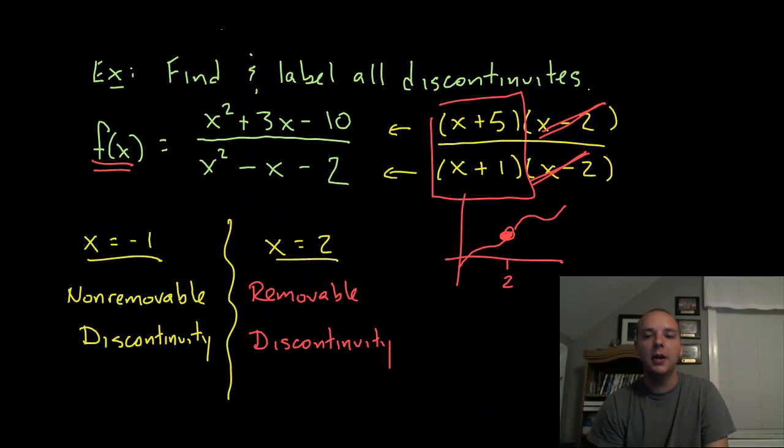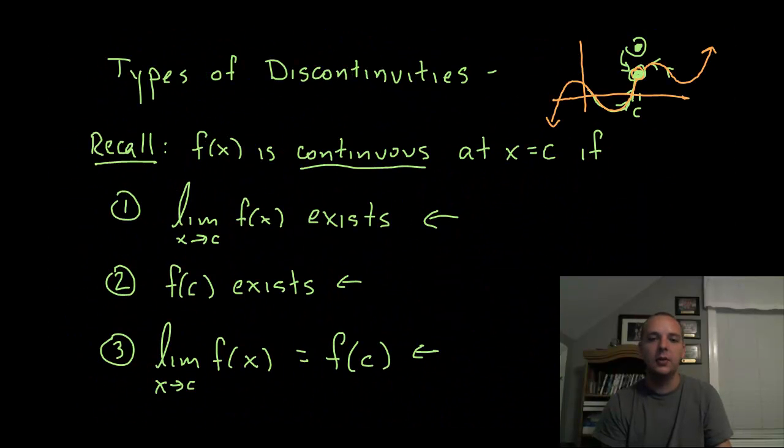But anyways, hope that helps you understand the two different types of discontinuities a little bit better, removable and non-removable. Now somebody could ask you, where is a function continuous? And are those discontinuities removable or non-removable? We should be able to answer all of those questions now.